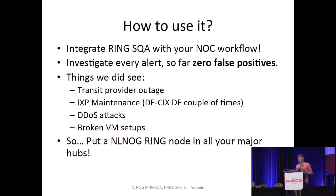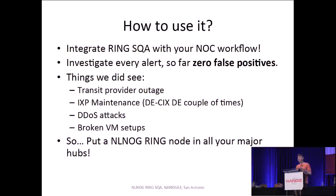What we have seen are transit providers with core routers that reboot and affect everything, IXP maintenances — for instance, DKX did maintenances a couple of months ago, and every time Ring SQA alerts were emitted from German nodes — DDoS attacks where congested lines mean SQA probes don't pass through as easily, and local problems where a top-of-rack switch has an issue and Ring SQA thinks the network is broken.